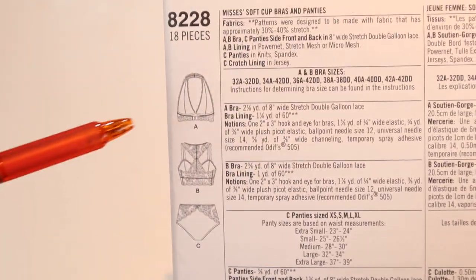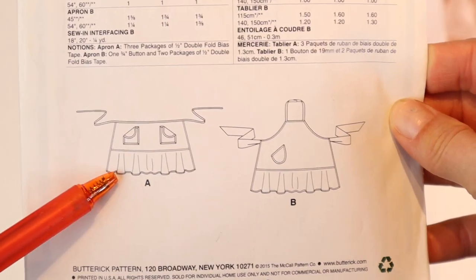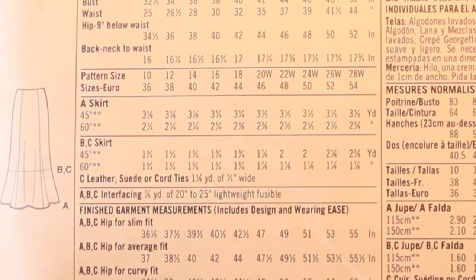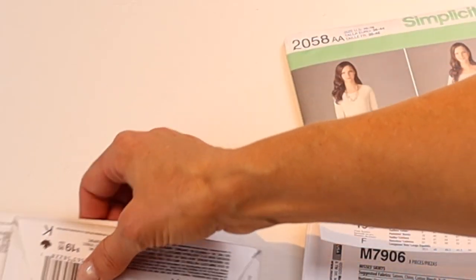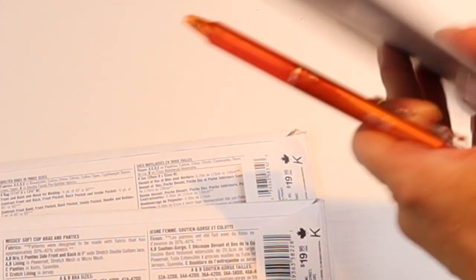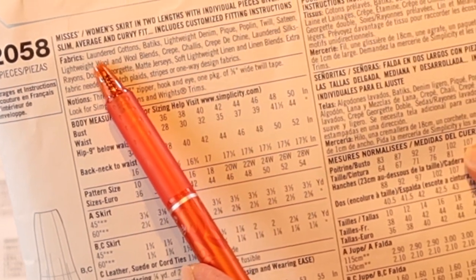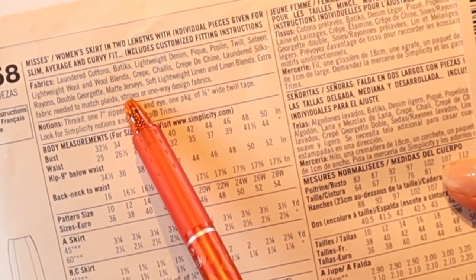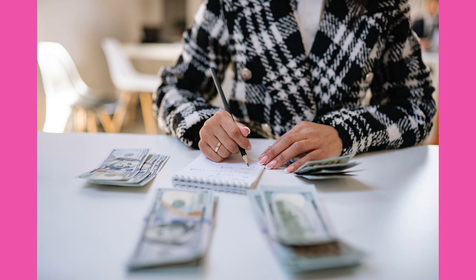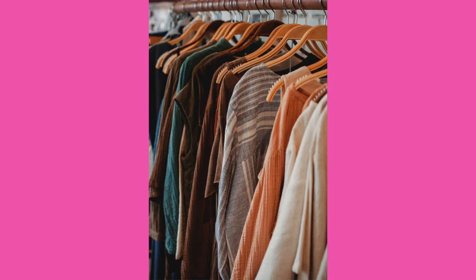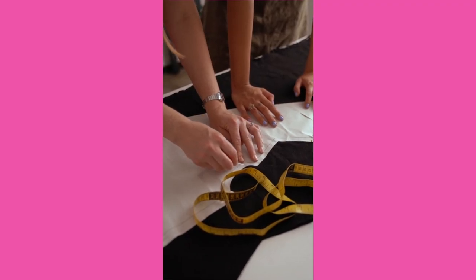The next section on the back you need to pay attention to is the line diagram, which gives you a closer look at what to expect from the view you've chosen. Descriptions can be brief or lengthy. The fabrics section is super important — it tells you exactly what type of fabric is most appropriate for this pattern. Also consider if you're using a one-directional print, plaid, checks, or stripes, as you'll need more fabric than recommended to allow for matching.